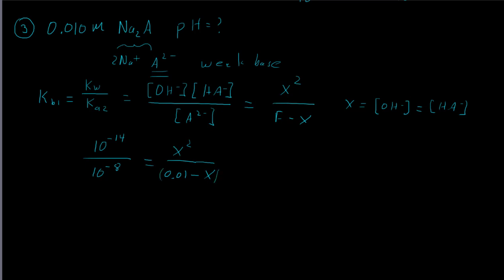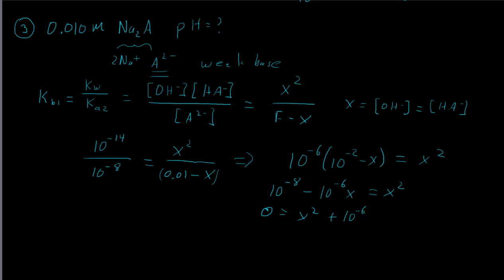Multiplying both sides by the denominator: 10⁻⁶ times (10⁻² minus x) equals x squared. Distributing gives 10⁻⁸ minus 10⁻⁶·x equals x squared. Writing in quadratic form: 0 equals x squared plus 10⁻⁶·x minus 10⁻⁸. Plugging into the quadratic solver and taking the positive root gives x equals 0.00009950.